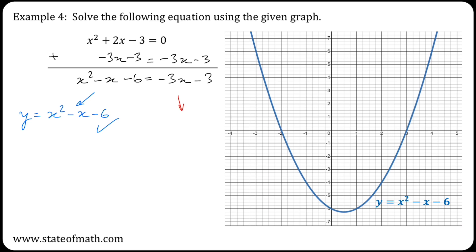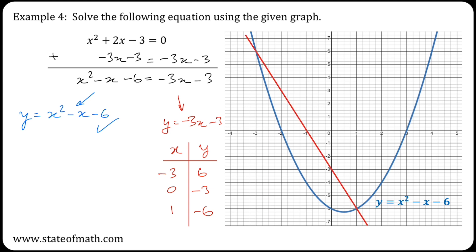Now y equals the left-hand side is exactly what I have plotted. The extra thing I'll have to do is plot y equals the right-hand side. Again, I'll need to make a table with x and y values. I'll use x equals minus 3, 0, and 1, and this will give me y values of 6, minus 3, and minus 6. Plotting these values gives the following graph. These are the two points of intersection, and their x values are minus 3 and 1.